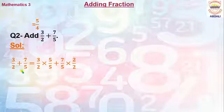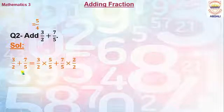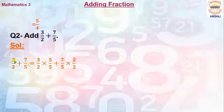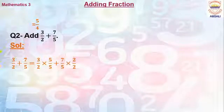When we have such a case where we don't find the needed number in the table of both denominators to make our denominators the same, in this case we will multiply our first fraction by the denominator of the second fraction, and our second fraction by the denominator of the first fraction.